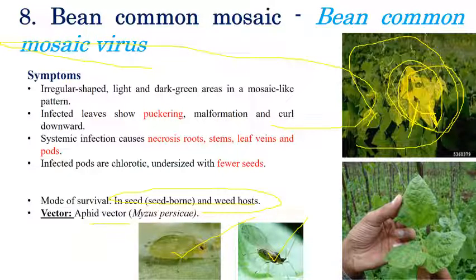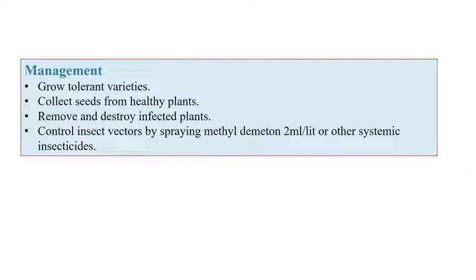For management: use tolerant or resistant varieties; select healthy seeds from healthy plants; remove and destroy infected plants. Spray methyl demeton at 2 ml per liter of water, or any systemic insecticide, to control the aphid vector — since it is a viral disease, controlling the vector automatically controls the disease.